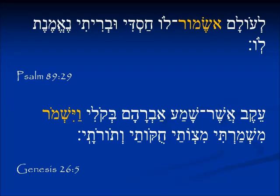Using the verb Shamar, we see Eshmur for 'I will guard forever' — 'forever I will guard him' in Psalm 89. In Genesis 26:5 we have the Vav conversive and then the prefix Yud: Yishmur — 'He will guard,' talking about Abraham. He will guard the Mishmar of God, the Mitzvot of God, the Chukot of God, and the Torot of God. The Yishmur is for Abraham will guard those things — the Yud prefix means 'he will do it.'